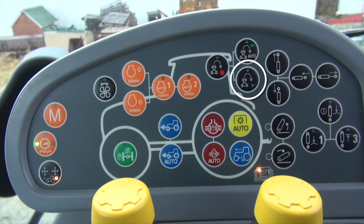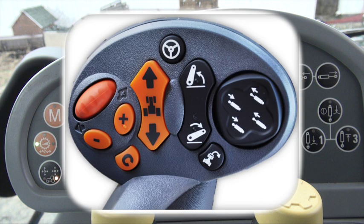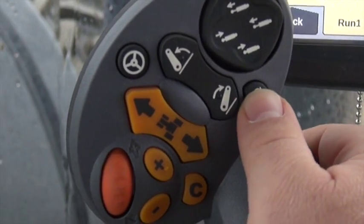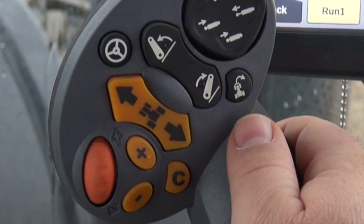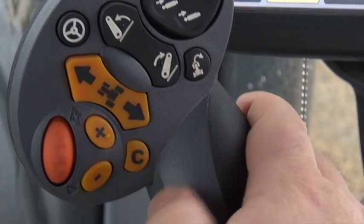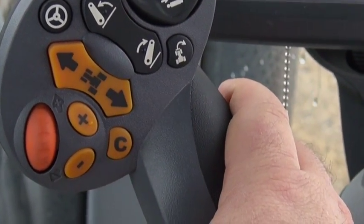Use the Step button on the Command Grip Handle to manually step through each recorded function. If you have inserted a pause in the recording, you will need to press the Step button two times to advance through it.